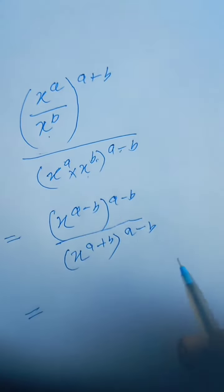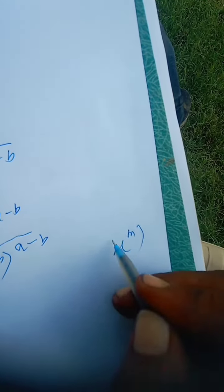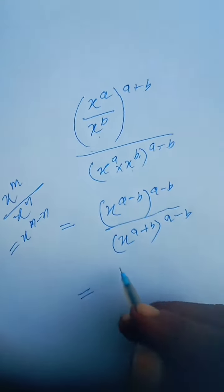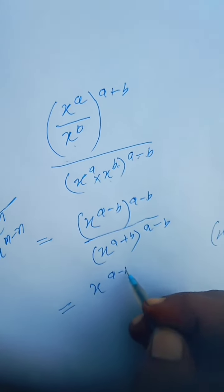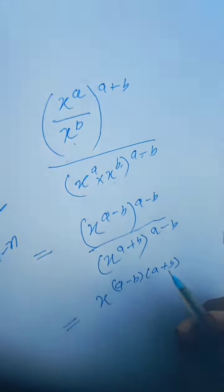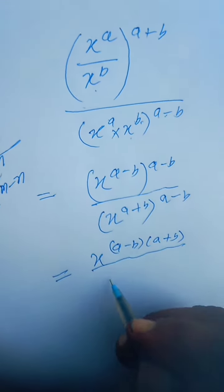Further, we know the rule: if x to the power m again power n, then powers are multiplied. Here it will be x to the power a minus b into a plus b, divided by x to the power a plus b into a minus b.